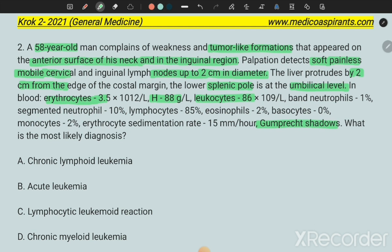The one-liner keyword I've told you in my lecture is that Gumprecht shadows present means it's always chronic lymphoid leukemia. Now let's go through the concepts one by one.